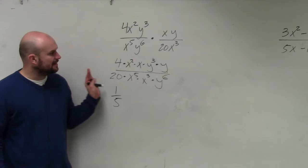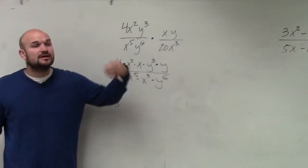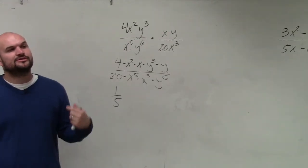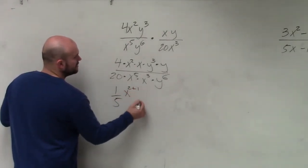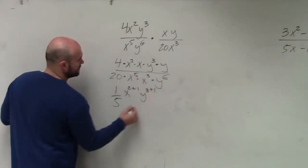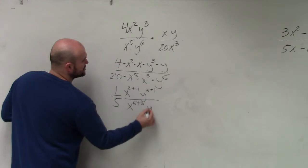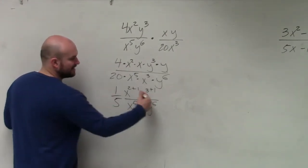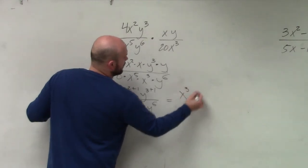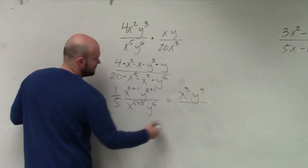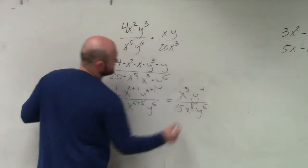Now I'm going to use the product rule of exponents. When you multiply exponents, you add the powers. So this is x to the 2 plus 1, y to the 3 plus 1, all over x to the 5 plus 3, and y to the sixth. By doing this, I now obtain x cubed times y to the fourth, divided by 5 times x to the eighth times y to the sixth.